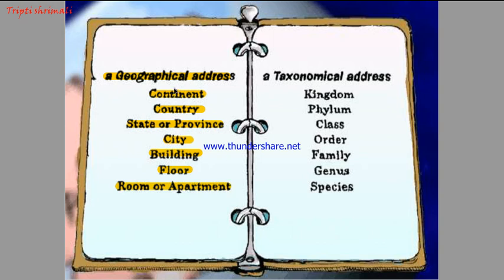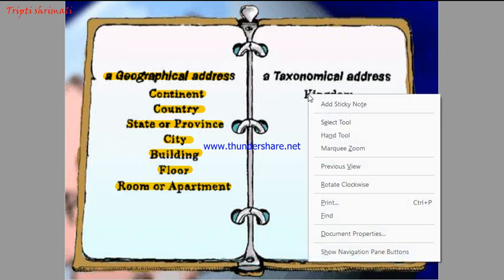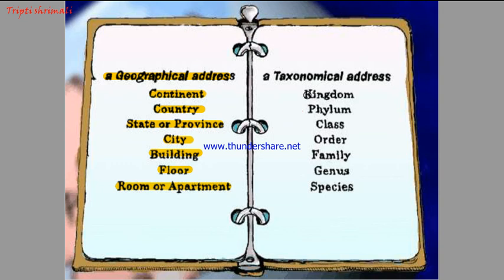This is called the geographical address. And here, the hierarchy gives a taxonomical address. Just as a geographical address locates a person, the taxonomical address locates an organism. First of all, we need to know the kingdom to which the organism belongs — we will talk about the five kingdoms.